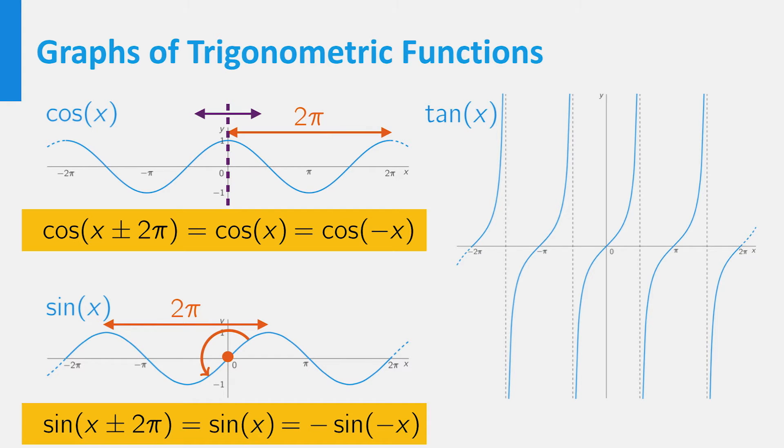From the graph of the tangent, you can see that the period equals pi, and that it has vertical asymptotes at the points where the cosine vanishes.